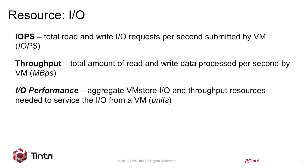To compute a daily value for IO performance, we find the busiest hour of that day and then take the average performance for that hour.